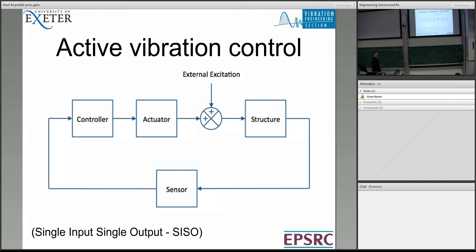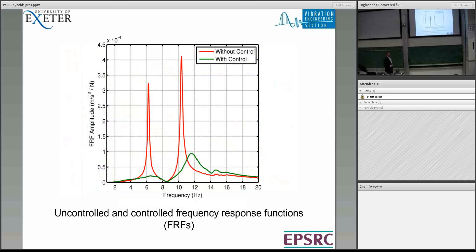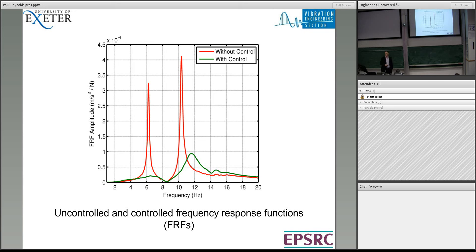Here's a general view of the vibration testing we did. We've got three shakers on the walkway and a whole load of sensors — two shakers used to control the bridge and another shaker for measurements. Here's a typical measurement: a so-called frequency response function, showing what amount of acceleration you get for a unit force input. The red line shows big amplifications at resonance — if you walk at frequencies tuned to those resonant frequencies, you get a large response. With our control system on, we can reduce the vibration very significantly — by a factor of more than 10. So very effective.